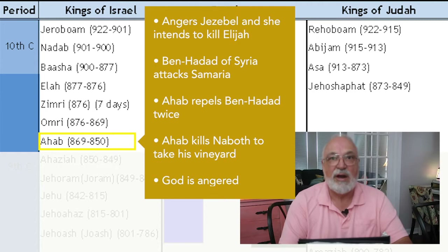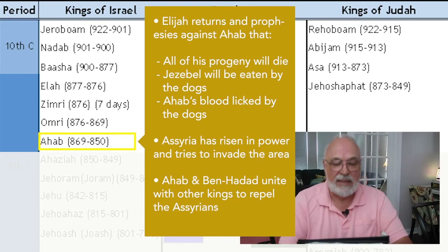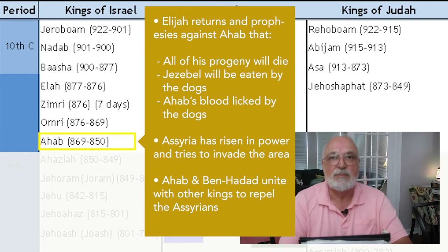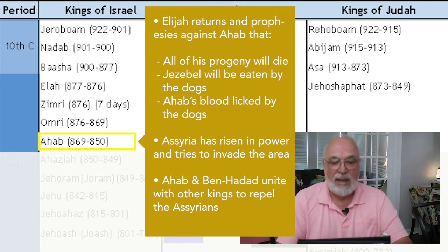This angers God so much that Elijah again comes and prophesies against Ahab, telling him that all of his progeny would die, that Jezebel would be eaten by the dogs, and that Ahab himself would have his blood licked by the dogs. Assyria, who is growing in power at this point, tries to invade the area. Ahab and Ben-Hadad, who had been rivals, unite with other kings and fight against the Assyrians, able to repel them.